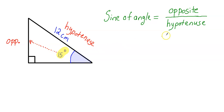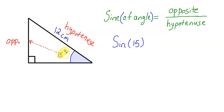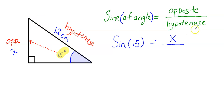Now, once I've labeled these sides, I can plug some numbers into this. Watch how I do this. On a calculator, sine is just SIN. And when I say of the angle, I'm referring to the angle I referenced here, which is 15 degrees. So I'm going to replace this angle with 15 degrees. This little circle means degrees, by the way. That equals the length of the opposite side — I don't know this length, so I'm going to call this length X. So I'll replace the opposite side with X because I don't know it, divided by the length of the hypotenuse, which is 12 centimeters. So I'll replace this with 12.